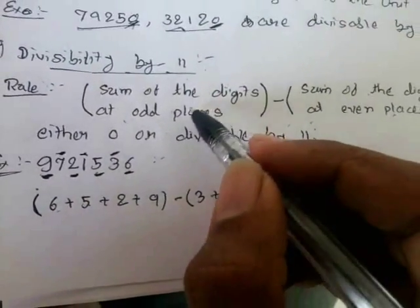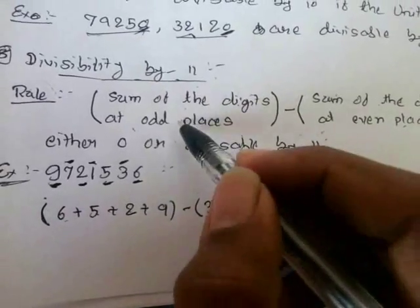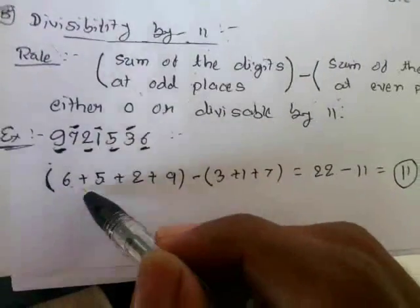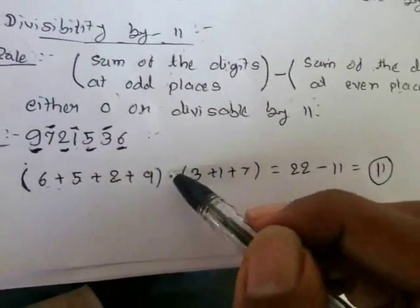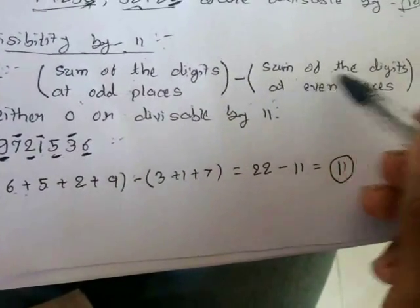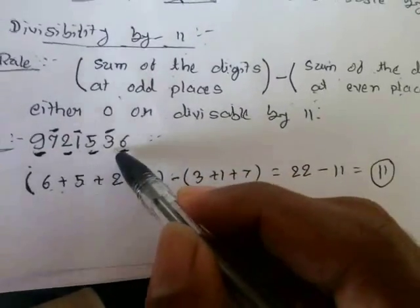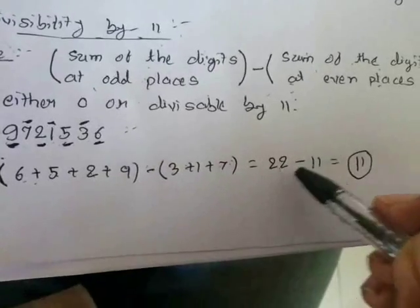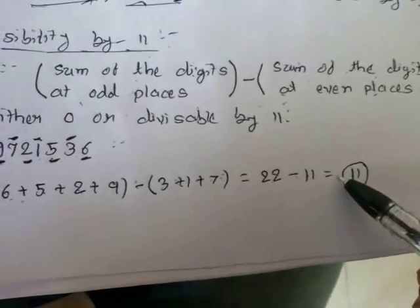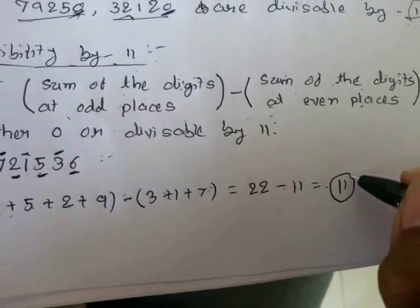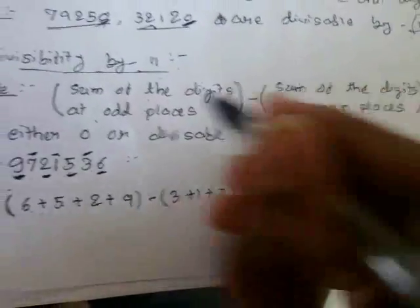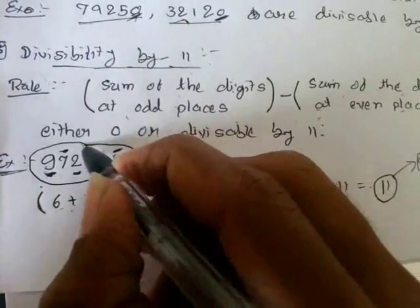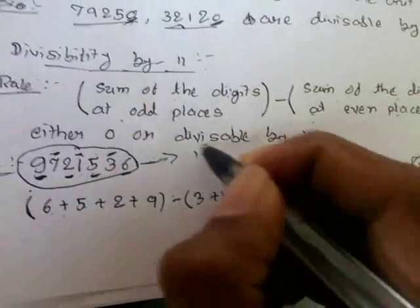So by the rule, the sum of digits at odd places is 6 plus 5 plus 2 plus 9, minus the sum of digits at even places, which is 3 plus 1 plus 7. This gives us 22 minus 11, which equals 11. And 11 is divisible by 11, so the whole number is divisible by 11.